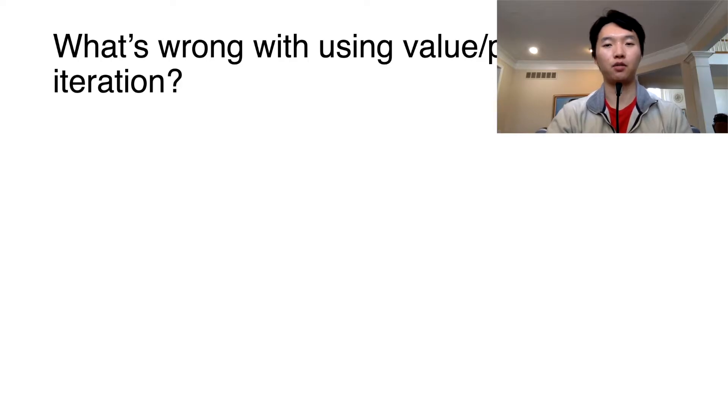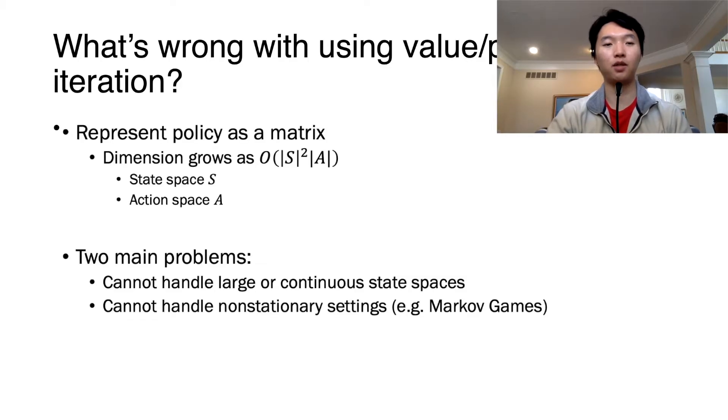What's wrong with using policy iteration? You have to represent your policy as a large matrix scaling horribly with the problem size. In practice, the state space can be incredibly large, even in simple protocols like Bitcoin. This leads to two main problems: value and policy iteration cannot handle large or continuous state spaces, and cannot handle non-stationary settings like Markov games, which are multiplayer repeated games.